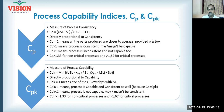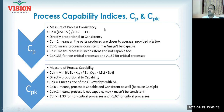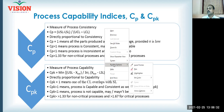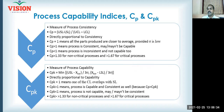CP does not confirm that your process is capable. When I say capable, it means all the parts produced by your process should necessarily fall inside the specification limits. CP does not measure that aspect — it measures only the ability of your process to produce parts continuously around the average. CP equal to one means all parts produced are closer to the average, provided the sigma is very low.